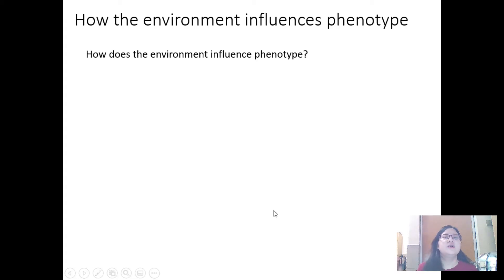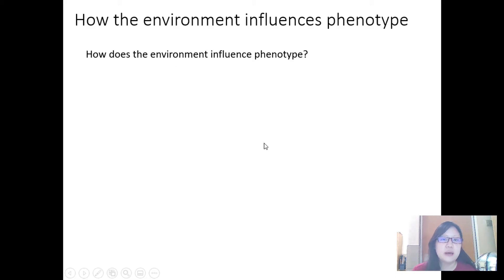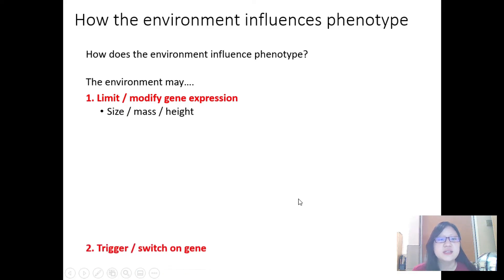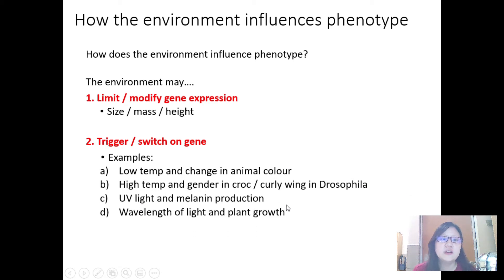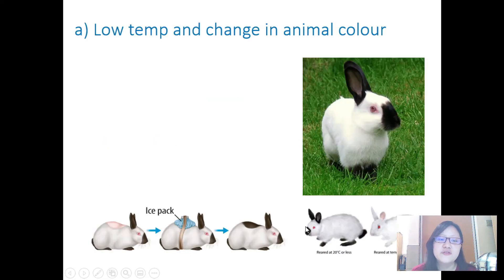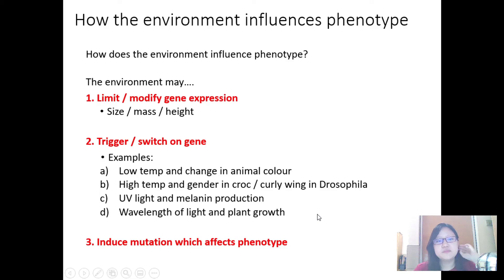How exactly does the environment influence phenotype? The environment may change a few things: number one, it may limit or modify gene expression — for example when it comes to size, mass, or height. Or it can trigger or switch on certain genes. The environment may also induce mutations which affect phenotype and result in new alleles.